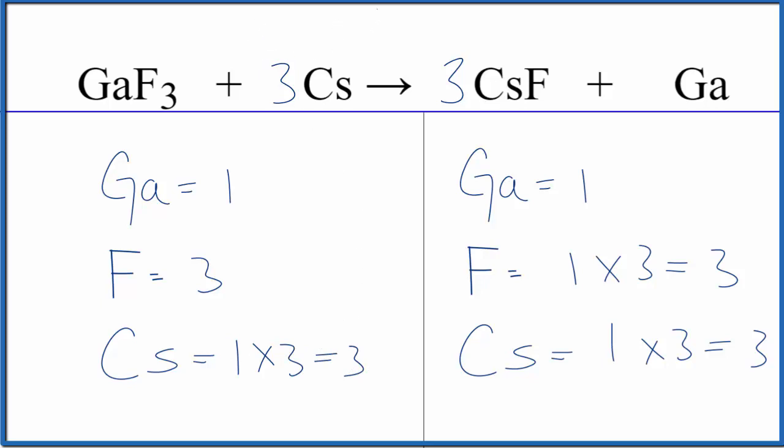If you want to write the states, they look like this. Since it's a single displacement, we start with solid cesium. When it bonds to the fluorine, we have cesium fluoride, which is aqueous and dissolved. The gallium is a solid.